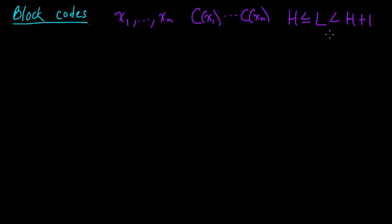It turns out that even for an optimal symbol code for a given source, the expected code word length can be arbitrarily close to this upper bound. So for example, if you're doing a binary encoding where b equals two, you could fail to reach this ideal limit by up to one bit per code word. And since you have n code words that you're stringing together, your total encoded length could fail to reach this ideal lower limit by up to n bits in a binary encoding.